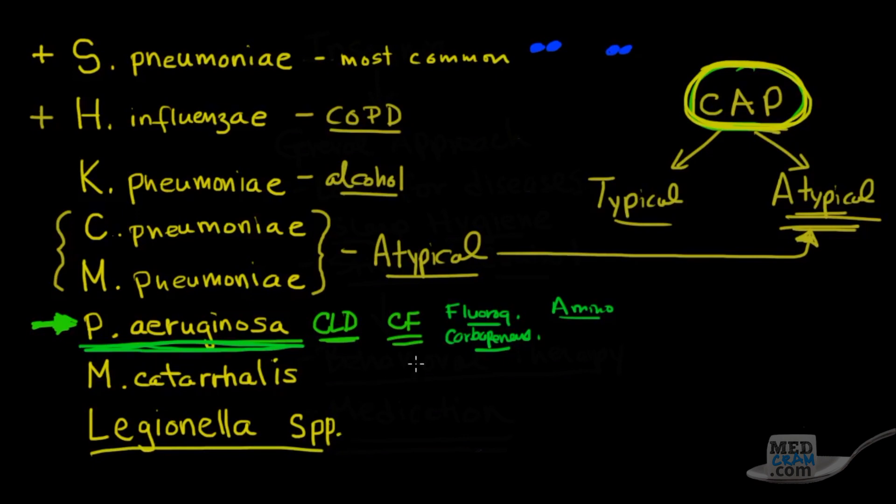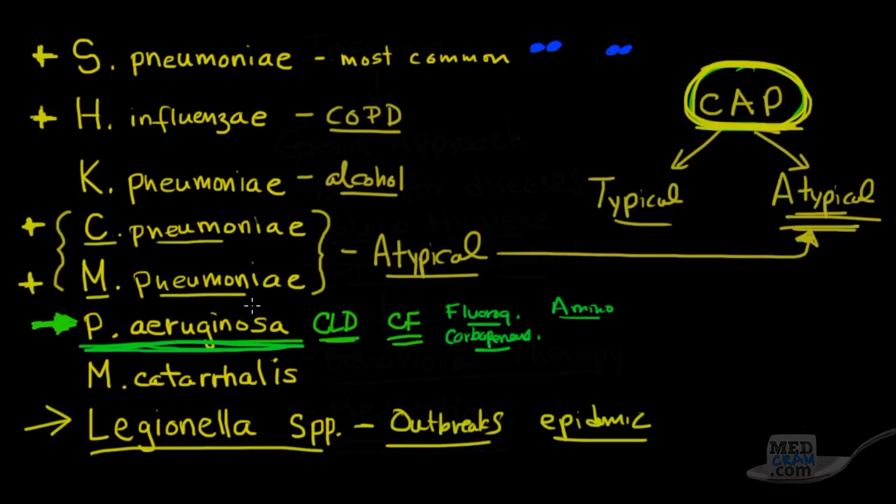And then finally, the last one here is legionella. Legionella we would not consider part of CAP because it's typically seen in outbreaks. So think of this in outbreaks. If there's an epidemic on a cruise ship or air conditioning or in a hotel, that's what you want to think about legionella, not in CAP. So what are ones that we see in CAP? We see streptococcal pneumoniae, haemophilus influenzae, and these atypicals - chlamydia pneumoniae and mycoplasma pneumoniae.